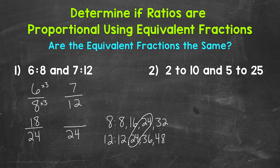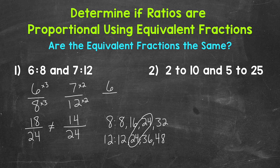Now let's go to 7 to 12. How do we get 12 to equal 24? Well, 12 times 2 is 24. Whatever we do to the bottom, we must do to the top in order to keep this equivalent. 7 times 2 is 14. So 14 to 24 is equivalent to 7 to 12. Now 18 to 24 is not equal to 14 to 24, which means our original ratios of 6 to 8 and 7 to 12 are not proportional. So we can write that as 6 to 8 is not equal or proportional to 7 to 12.